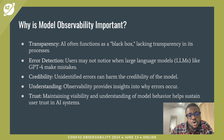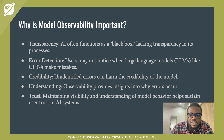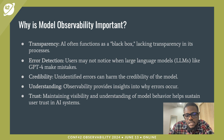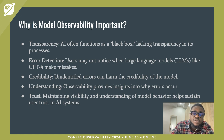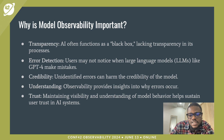So why is model observability important? Easily at the top of this list is transparency, because oftentimes AI functions as a black box that lacks transparency in its processes. Model observability is a way to gain transparency and shed light into some of these processes. It also helps in error detection, because users may not notice when large language models like GPT-4 make mistakes. By detecting these mistakes and providing transparency, the credibility of our model is increased.